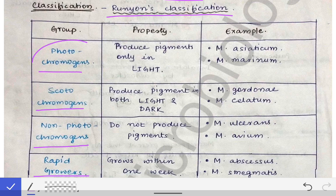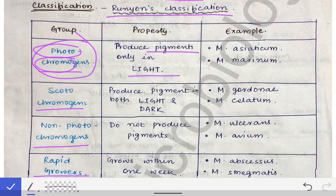The first group is photochromogens. By the term itself: 'photo' means light, 'chromo' means color, and pigments are colorful. So photochromogens are those mycobacteria which produce pigments in light.